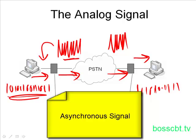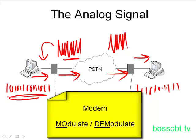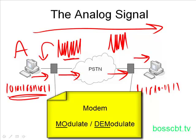The word modem is short for modulate and demodulate — M-O and D-E-M. When sending in one direction, PC A's modem is going to modulate, and PC B's modem is going to demodulate that analog signal. So modem is just a shortened phrase for what's actually taking place: modulate and demodulate.